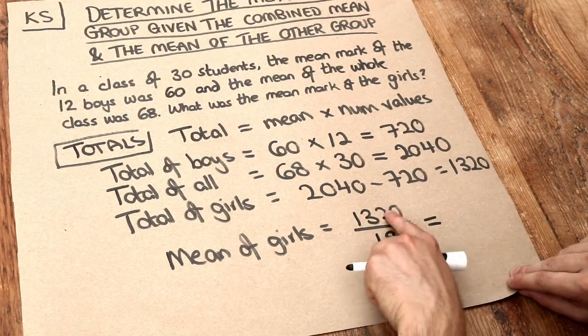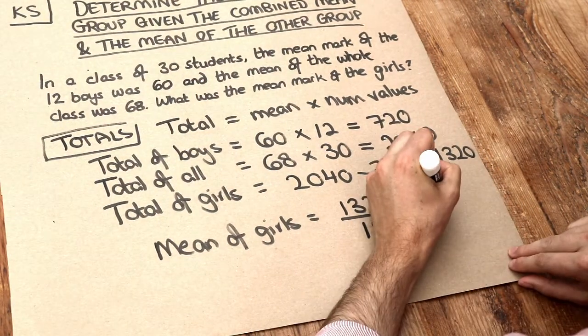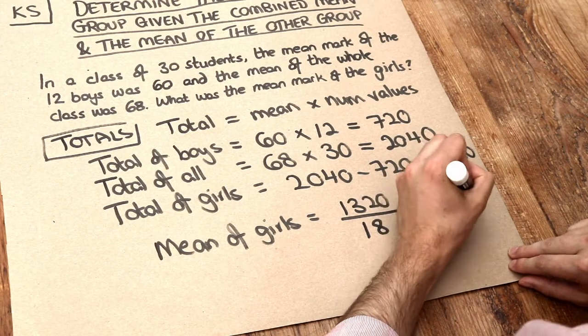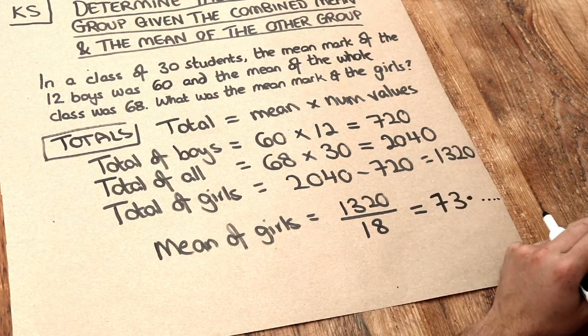So we now just have to do 1,320 divided by 18, and that's going to be 73 point something. I must admit, I've misplaced my calculator.